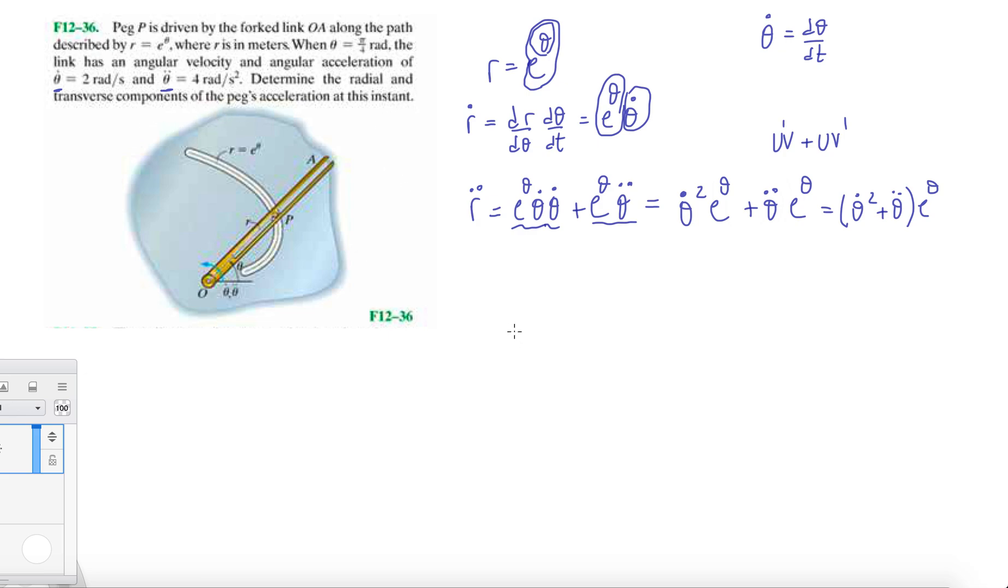The radial component, just like before, we're gonna have r double dot minus r theta dot squared. And the transverse component will be r theta double dot plus 2 times r dot theta dot. It's so hard to keep everything straight with all these dots and double dots.